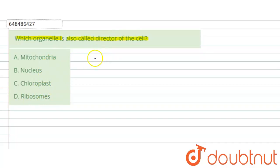This is a very simple solution. It will obviously be answer option number B, that is nucleus. Nucleus is only called as the director of the cell. Why? There are many reasons behind it.